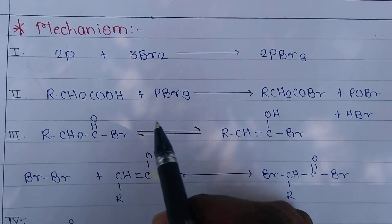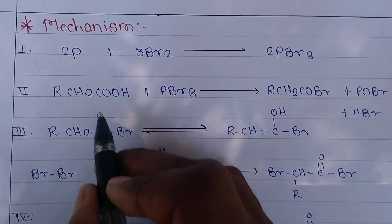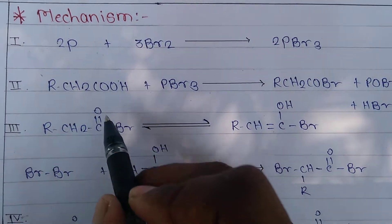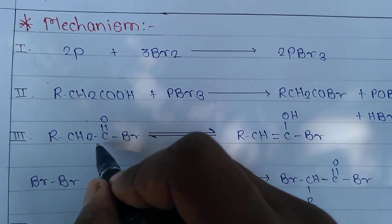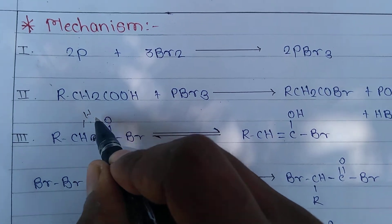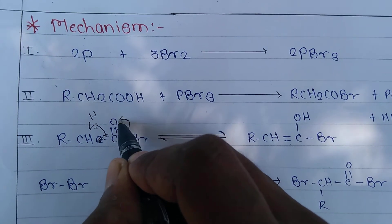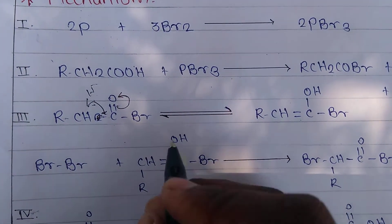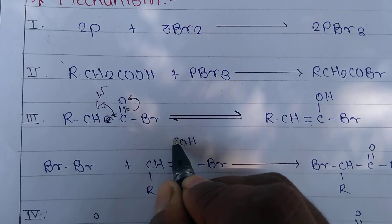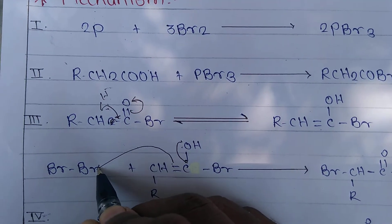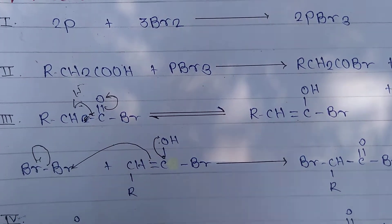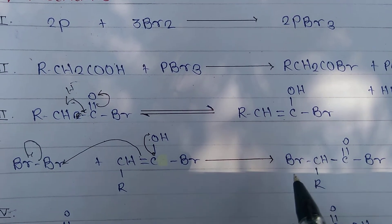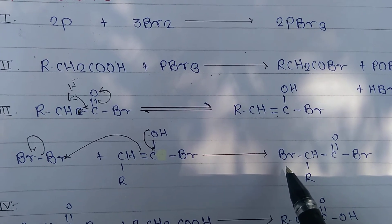The acid bromide then undergoes alpha-halogenation through its enol form. It forms an enol — the hydrogen at the alpha position is removed, and the lone pair attacks; the double bond takes bromine. So the product formed has the alpha position halogenated, meaning bromine is introduced at the alpha position.